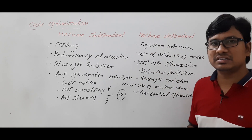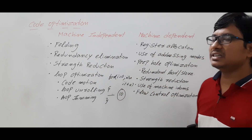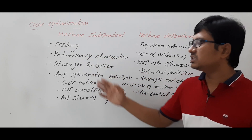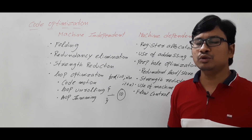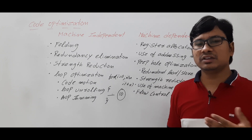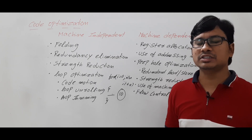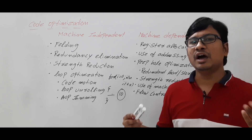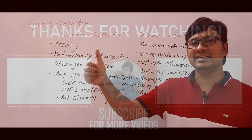I hope you have understood machine-independent code optimization, machine-dependent code optimization, folding, redundancy elimination, and strength reduction. In the next video I will discuss how to identify a loop from three-address code. If you still have any doubts, feel free to ask in the comment section. Thank you for watching, have a nice day.